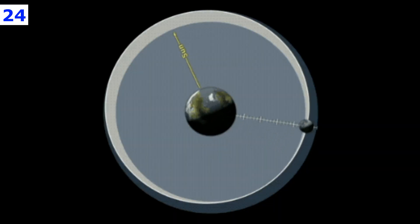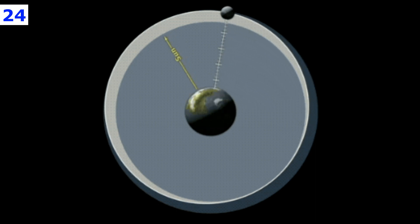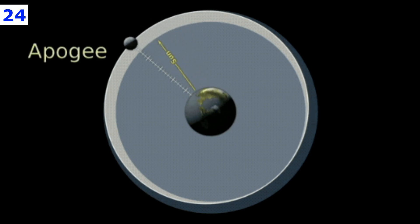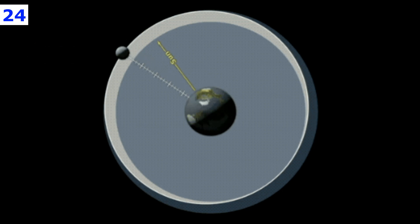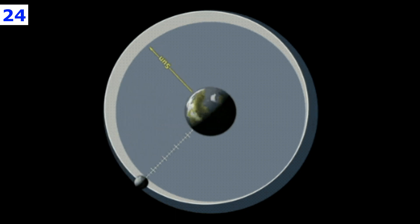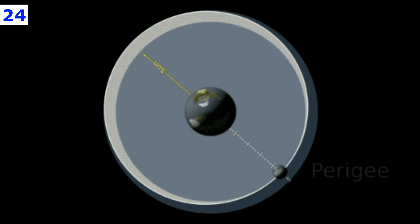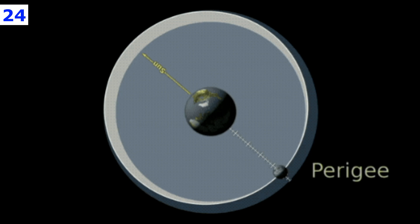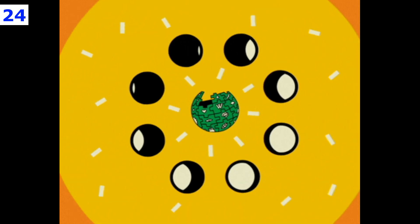If you notice a full moon looking extra large, it might be a supermoon, which happens when the full moon is at its closest point to Earth in its orbit. Or it might be an illusion if you are gazing upon a full moon close to the horizon. A full moon peaks at a precise time, though it can appear full for two or three days.